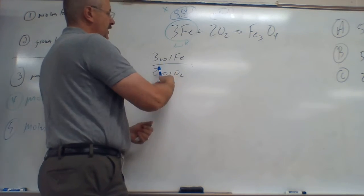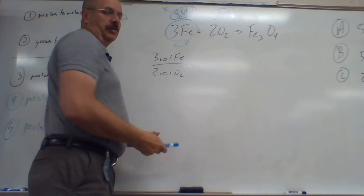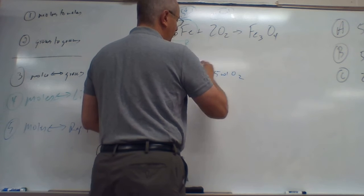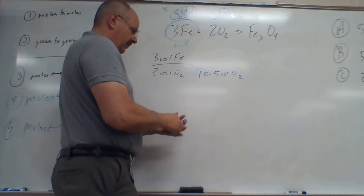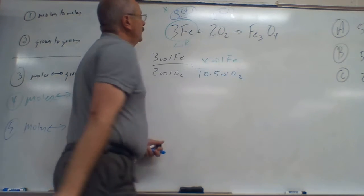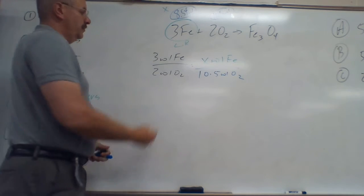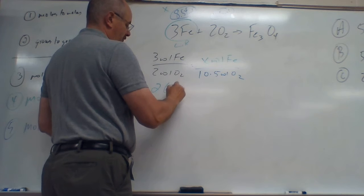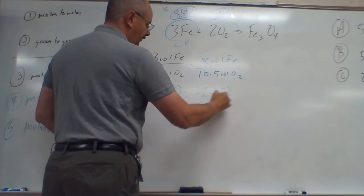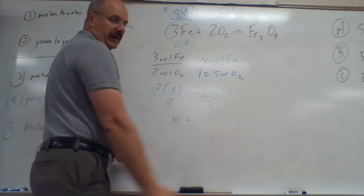So if we do that, then the first part hasn't changed—it's still 3 moles of this to 2 moles of that—but now we've got 10.5 moles of O₂ and we're going to find out x moles of Fe. So cross multiply: 2 times x equals 3 times 10.5. Divided by 2, divided by 2, and x ends up equaling 15.75.